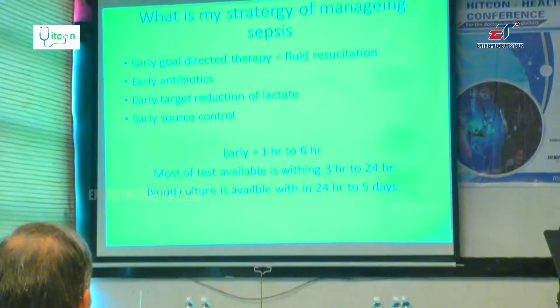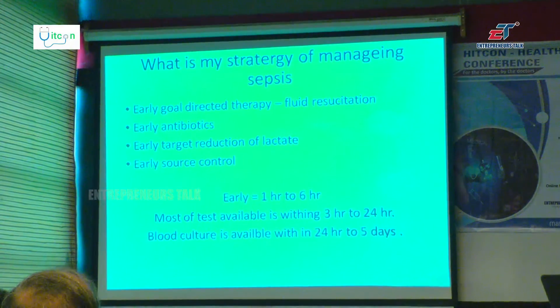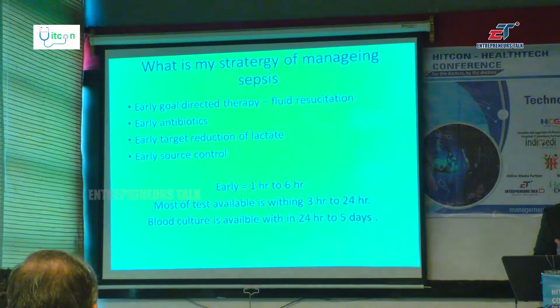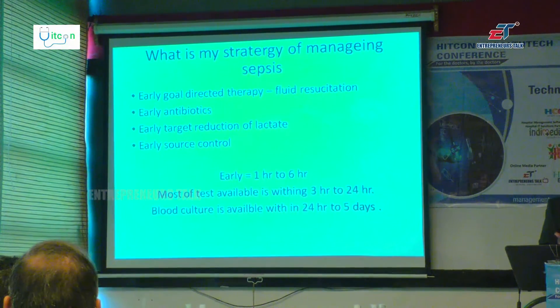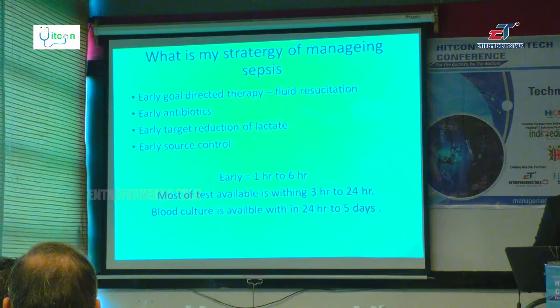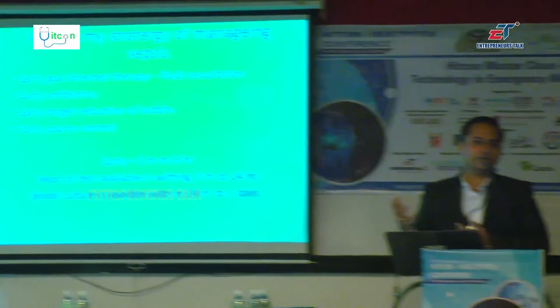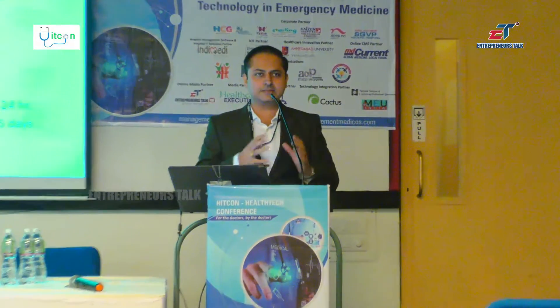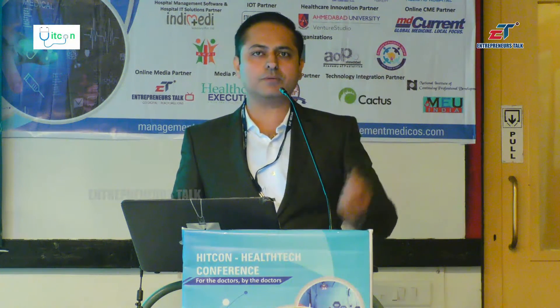Everyone teaches: this is the septic patient, give early antibiotic, early fluid resuscitation is key, early target reduction on lactate, early source control. But what does 'early' mean? Early means one hour — I have to start antibiotics, fluid resuscitation, all within one hour, and my target is lactate level reduction to normal within six hours. But when I am confused, my lab report will be there in 30 minutes, or 3 hours, or 24 hours. For these confusing patients — whether it is septic or not — how do we achieve the early target? Blood culture is the gold standard, but only 50 percent are positive, and the positive report comes after 48 hours. So what is the solution for early detection?